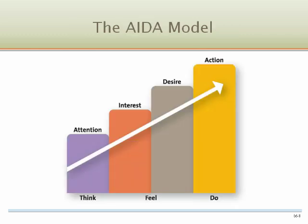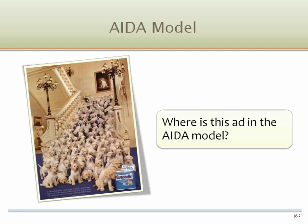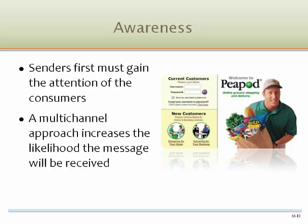The AIDA model provides a basis for understanding how marketing communications works. This model suggests that awareness leads to interest, which leads to desire, which leads to action. At each stage, the consumer makes judgments about whether to take the next step in the process. Dogs and babies are very good at attracting awareness in advertisements. Even the best marketing communication can be wasted if the sender doesn't gain the attention of the consumer first.